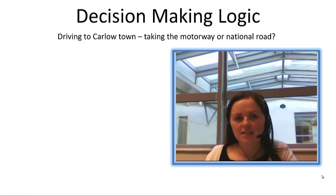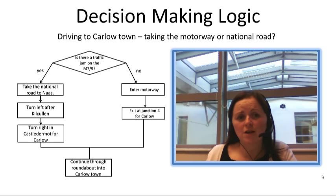Take for instance a decision we might make if we were driving to Carlow Town. Would we take the motorway or the national road? Our decision is going to depend on whether there is a traffic jam on the motorway or not.